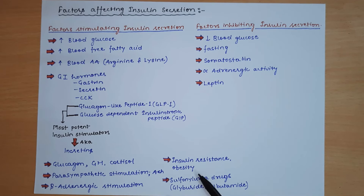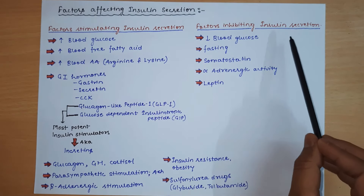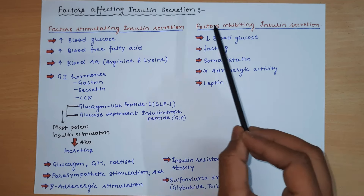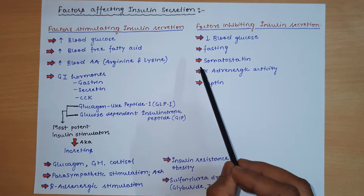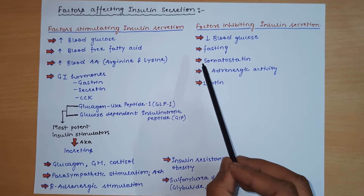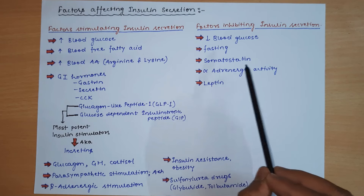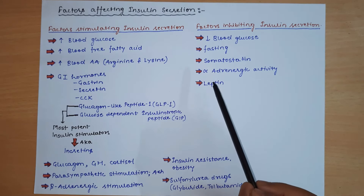Factors that inhibit insulin secretion include: decreased blood glucose concentration, fasting, somatostatin (which inhibits both insulin and glucagon secretion), alpha-adrenergic activity, and leptin hormone, which also inhibits insulin secretion.